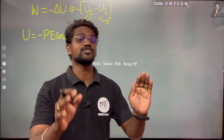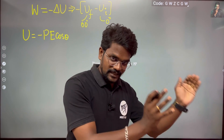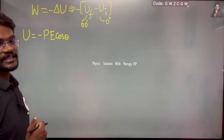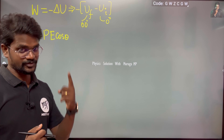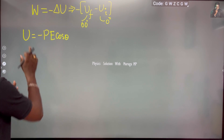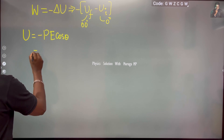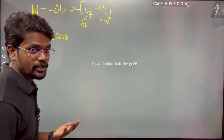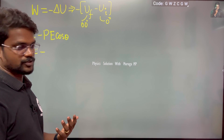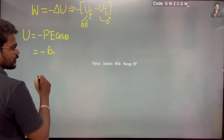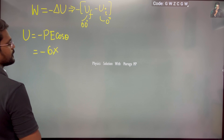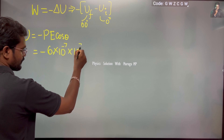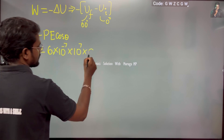Potential energy of a dipole in an electric field is minus PE cosθ, and torque is PE sinθ — don't get confused. The dipole moment for one whole mole is 6.03 multiplied by 10 to the power minus 7, and the electric field is 10 to the power 7.